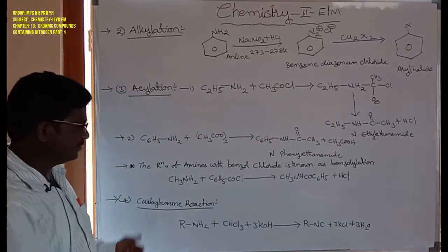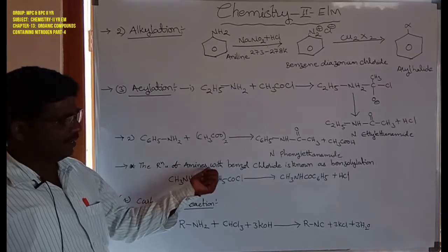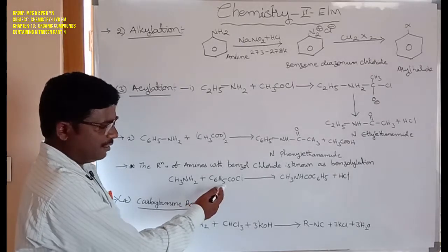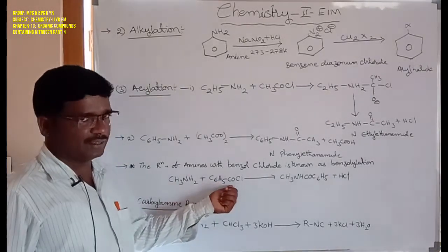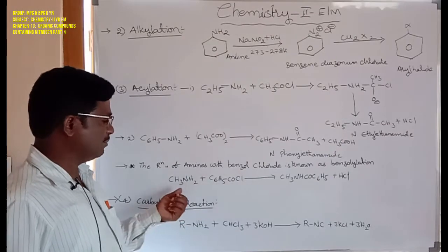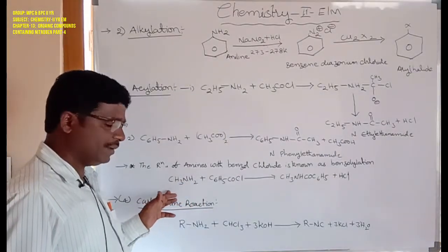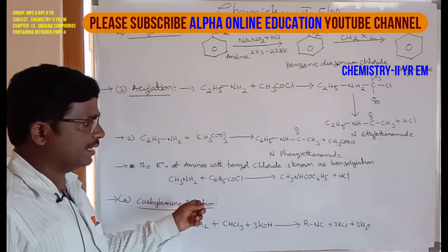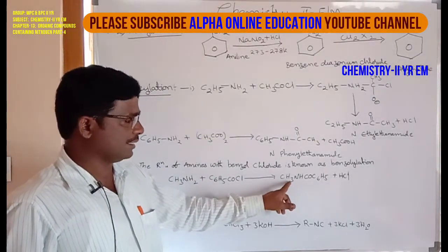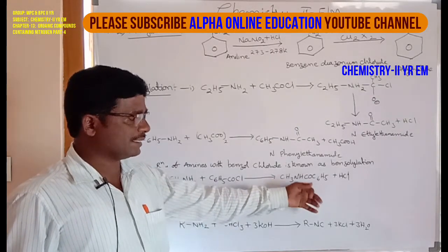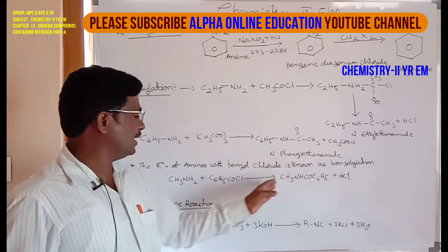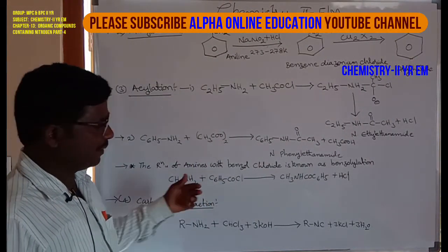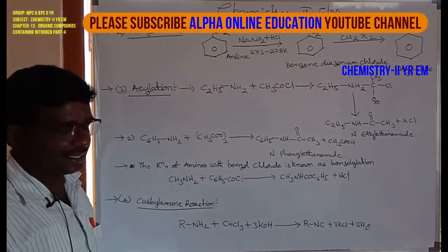The next reaction involves amines with benzyl chloride (C6H5CH2Cl). For example, methylamine — an aliphatic amine — treated or combined with benzyl chloride forms the product methyl phenyl ethanamide. This is known as the benzylation reaction of methylamine and benzyl chloride, also classified as an acylation reaction.